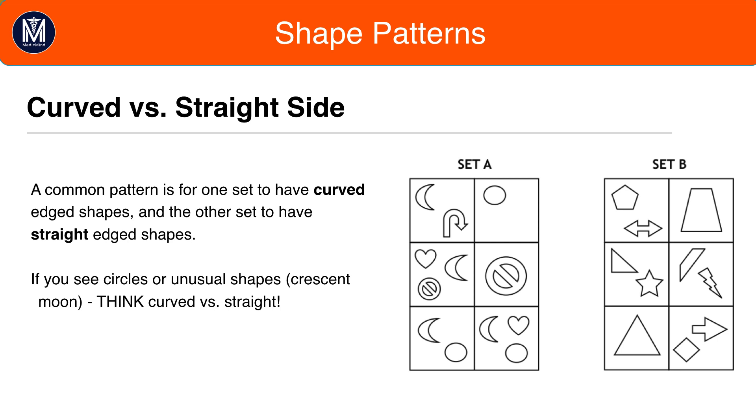The UK question writers don't have enough curved shapes to use and can't use a circle every single time. And they only tend to use these shapes for this particular pattern. So if you see the crescent moon or see a circle, be on the lookout for this particular pattern.